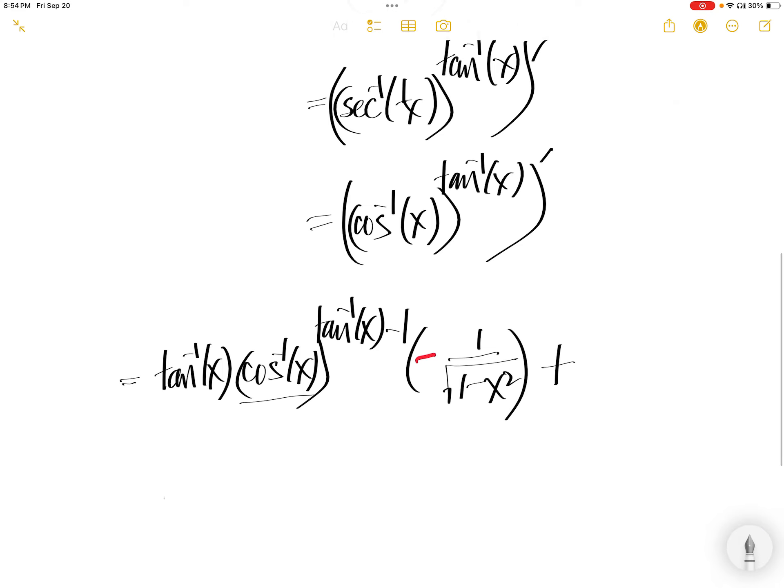Plus the same thing: arccos x to the power of arctan of x, ln of the base, times the derivative of arctan x, which is 1 over 1 plus x squared.